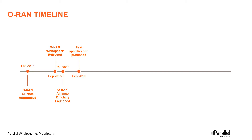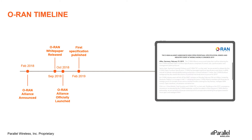The first specifications were published just in time for Mobile World Congress in February 2019. The open fronthaul specifications comprising of control, user, synchronization, and management plane protocols were released. In our earlier video, we explained that the fronthaul and X2 are the most important interfaces for achieving a truly open RAN.